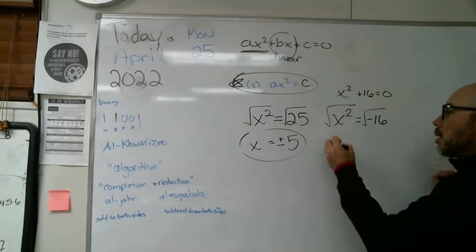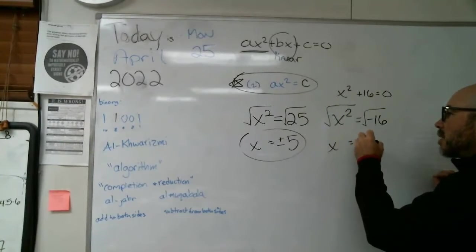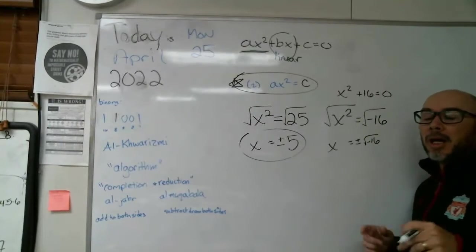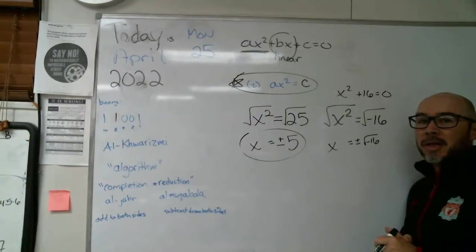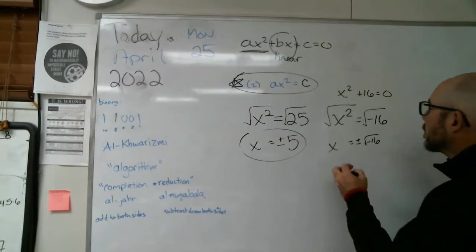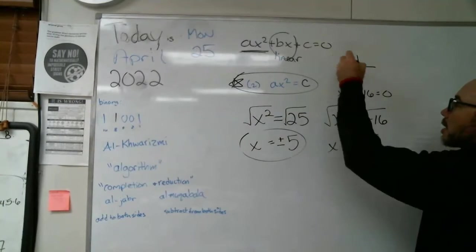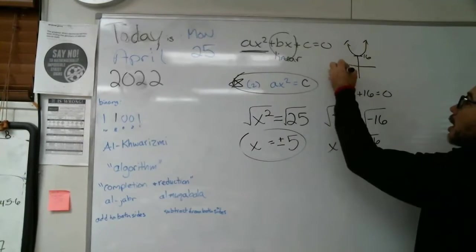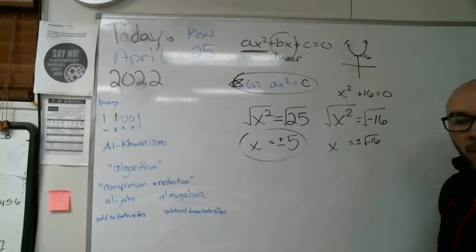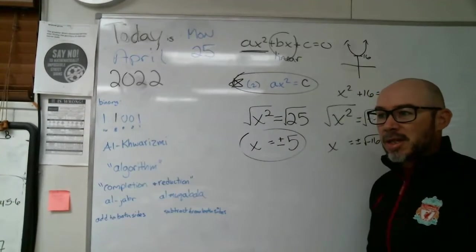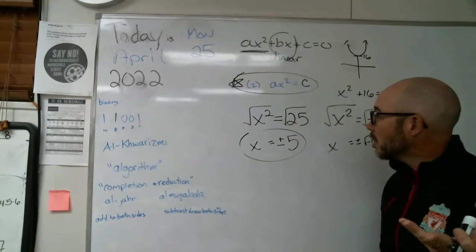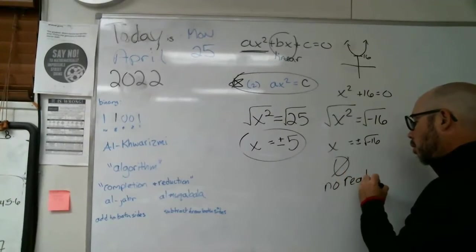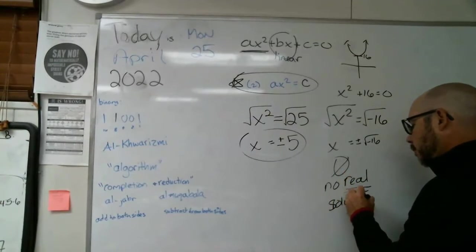Oh, we got a problem over here. This side is x, but we get plus minus something that we don't really have a definition for not till next year when we talk about complex numbers. This has no real answers. And if we looked at this as a graph, it would be way up here at 16. And there's nowhere on the x axis where it touches where it crosses and is a zero or has a solution. So this one has no solutions, or we would say no real solutions.